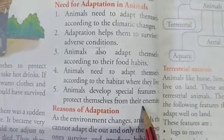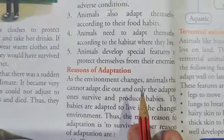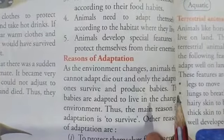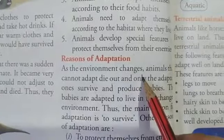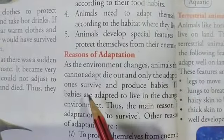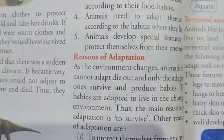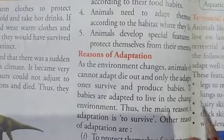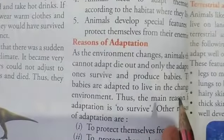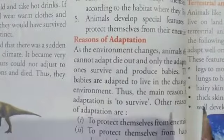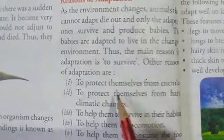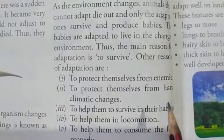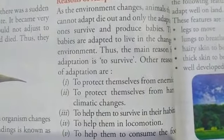Animals also develop special features to protect themselves from their enemies. Next, the reasons of adaptation. The main reason for adaptation is to survive. As we know, there can be some environmental changes. As the environment changes, animals that cannot adapt die out, and only the adapted ones can survive and produce babies. The other reasons of adaptation are: first, to protect themselves from enemies; secondly, to protect themselves from harsh or unpleasant climatic changes; and they also adapt to help them survive in their habitat.